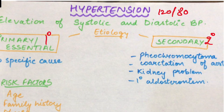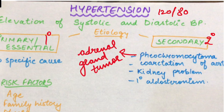Secondary causes mein ek hai pheochromocytoma — jo hamare adrenal glands ka tumor hota hai. Adrenal glands adrenaline secret karte hai, jo ek stress hormone hai. Woh vasoconstriction karna chahega. Stress ki related hormones body mein relaxation nahi karengi — stress hormones obviously constriction karengi. Toh that will lead to hypertension.